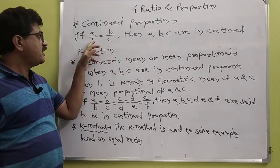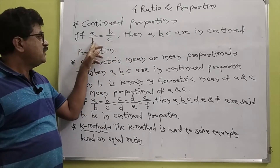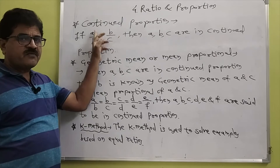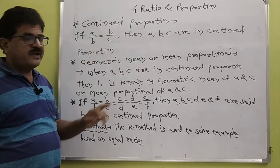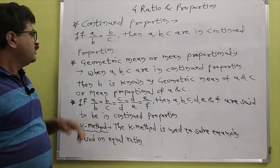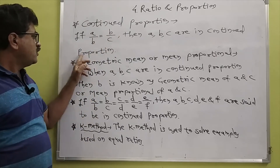We can write this as B into B, that is B squared, is equal to A times C.